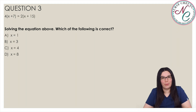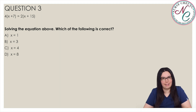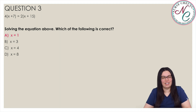4 times parentheses x plus 7 is equal to 2 times parentheses x plus 15. Solving the equation above — which of the following is correct? Is it A, x is equal to 1; B, x is equal to 3; C, x is equal to 4; or D, x is equal to 8. The correct answer is A, x is equal to 1.